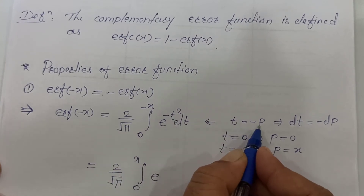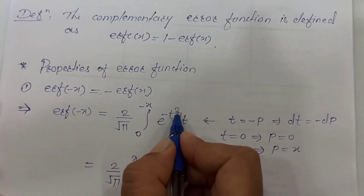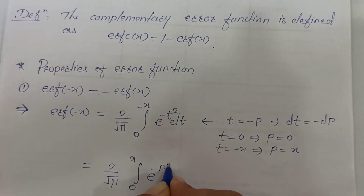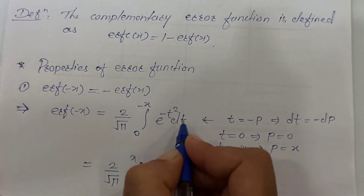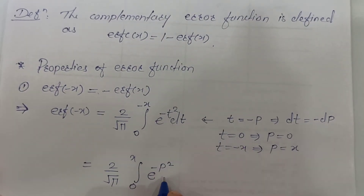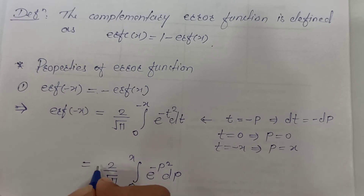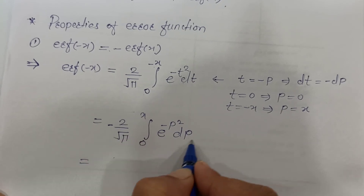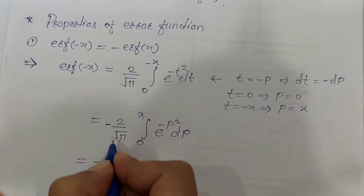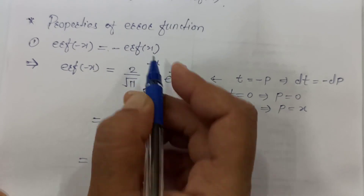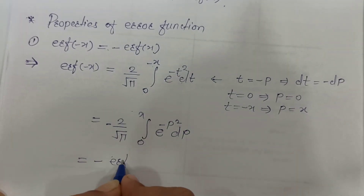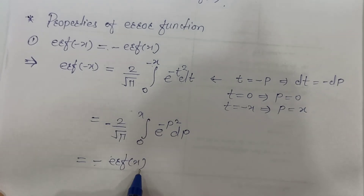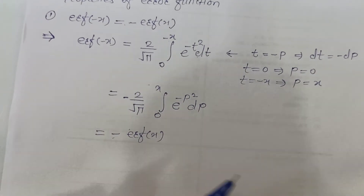Instead of t we put minus p, so t squared equals minus p squared, which is the same as p squared. So instead of minus t squared we have minus p squared, and instead of dt we write minus dp, pulling the minus sign outside. This resulting expression is nothing but minus Erf of x. So Erf of minus x equals minus Erf of x — this is the first property of the error function.